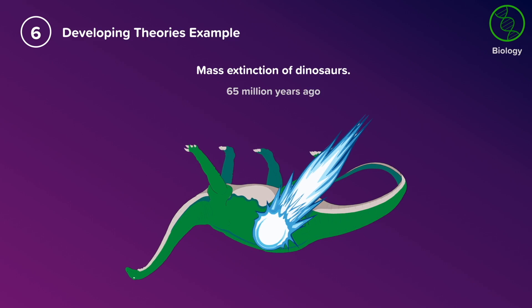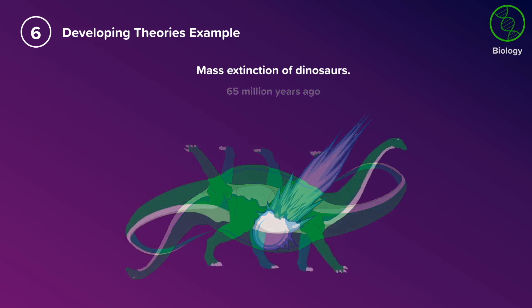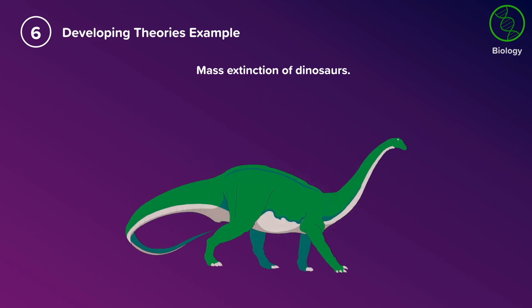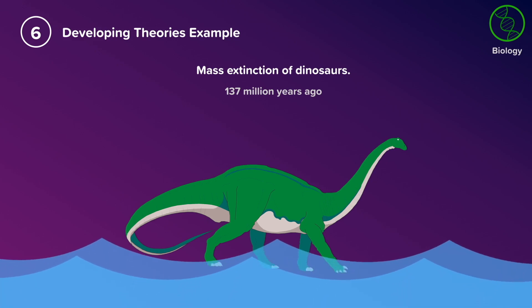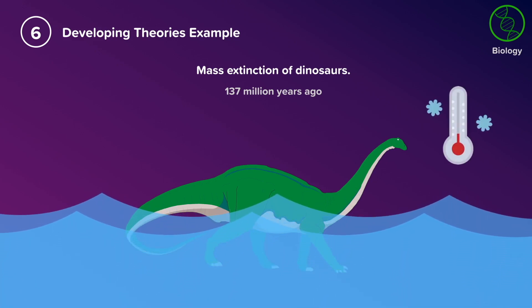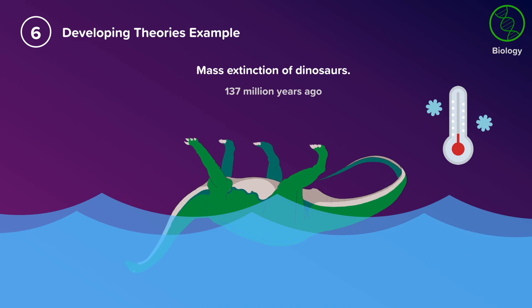Not long after this theory was published came the suggestion that dinosaurs actually became extinct around 137 million years ago, occurring at a much slower rate than previously thought. With evidence from fossils and minerals in Norway, this theory suggests that sea ice melting caused flooding of the Earth, seas, and oceans. With very cold water, there was a drop in sea temperature, triggering the mass extinction of the dinosaurs.